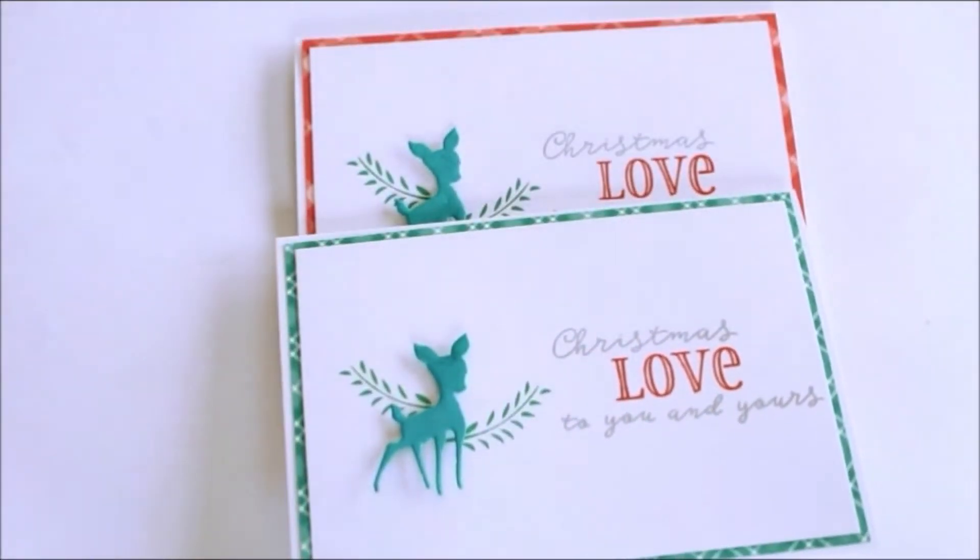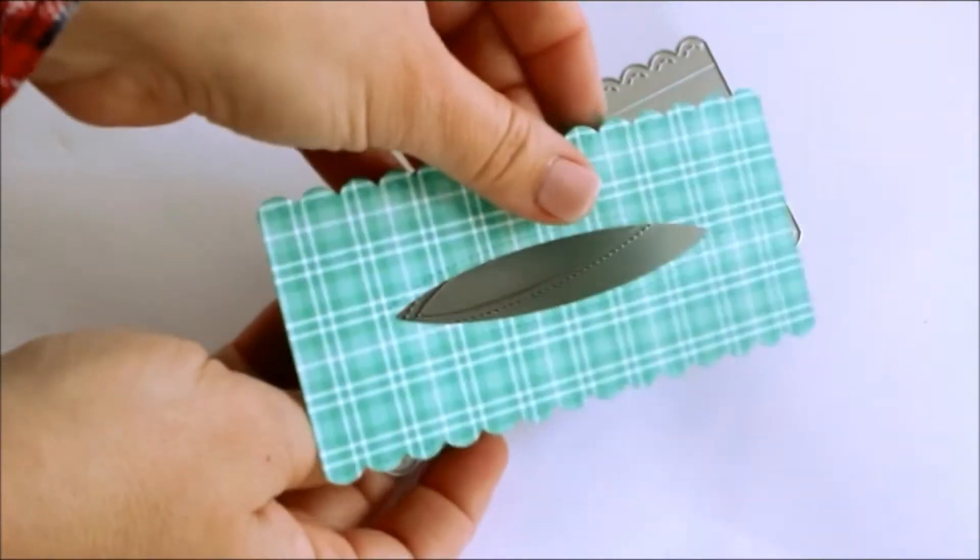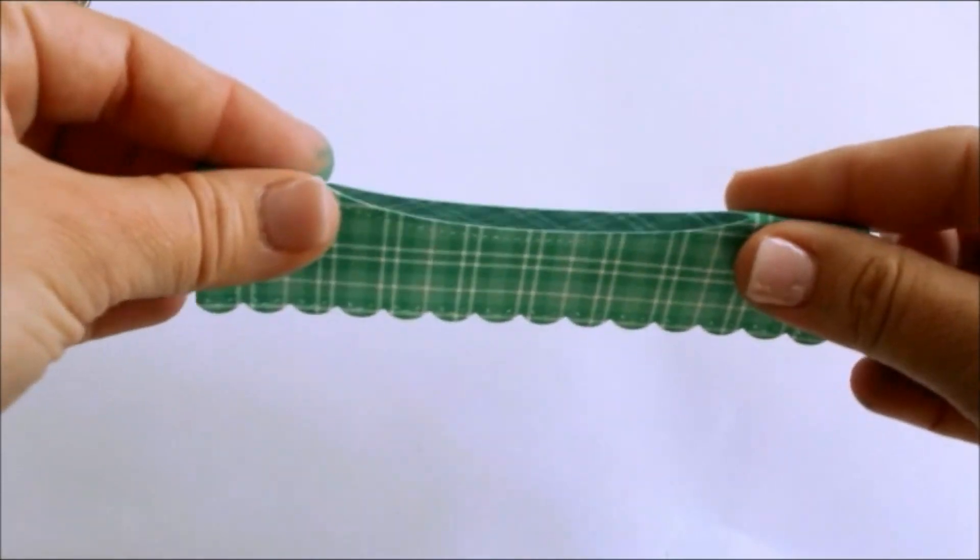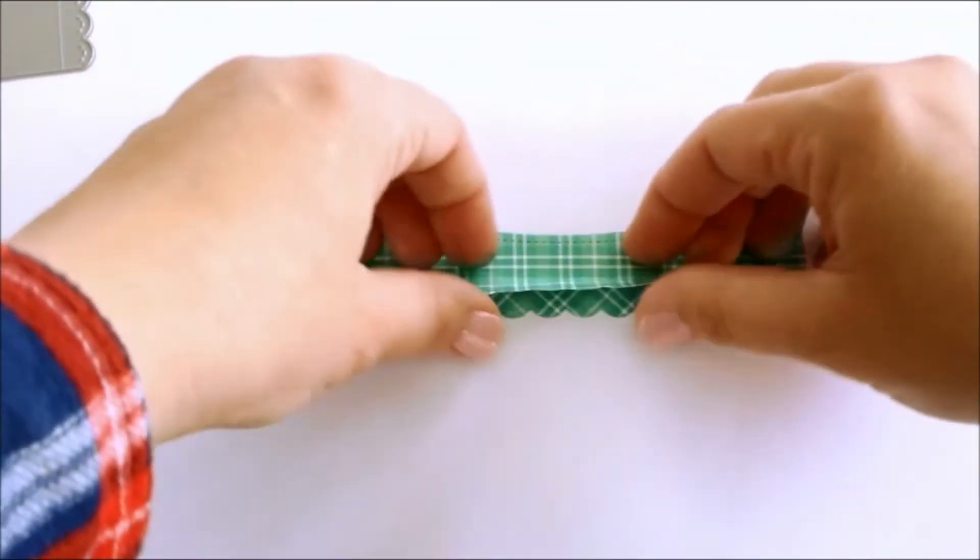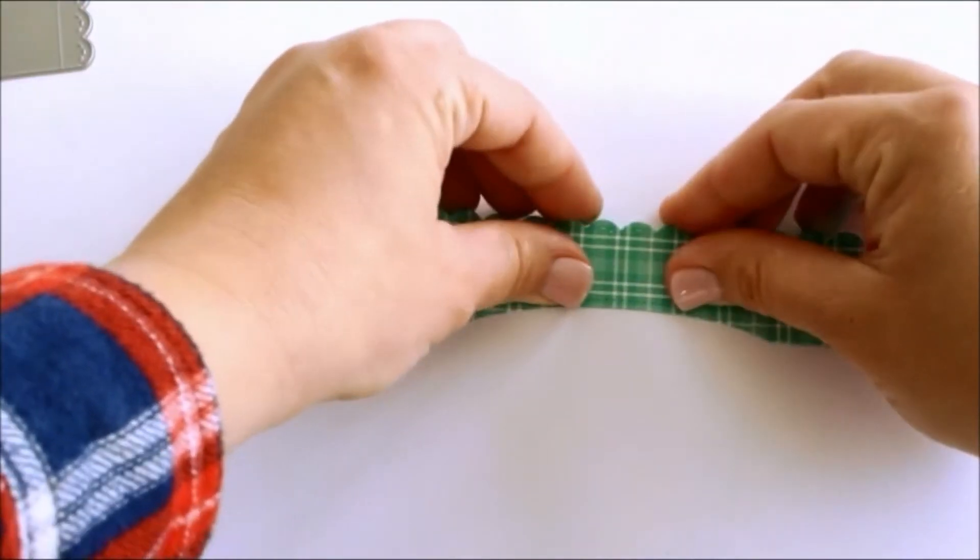Okay, both cards are done. But I wanted to add a gift card to each one. So I used the Lawn Fawn gift card pop-up die to cut some patterned paper to match each card. Folding them is really easy. The die also adds some score lines so you know where to fold.